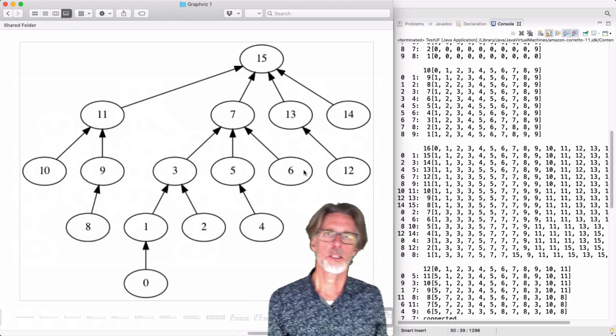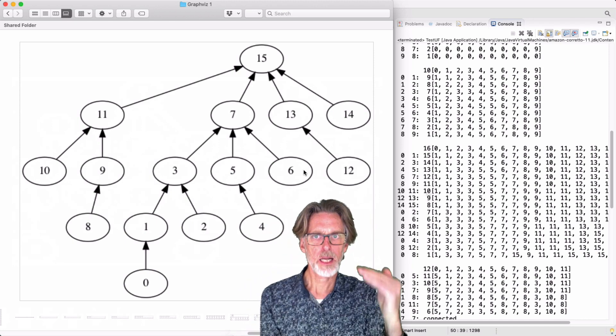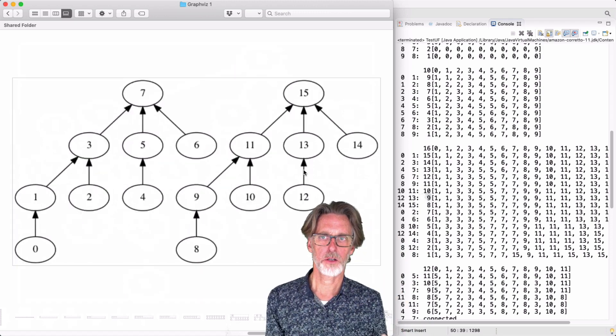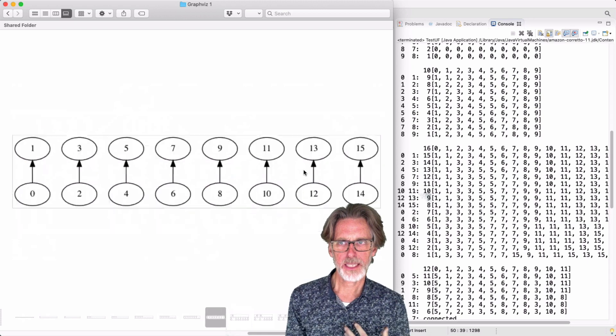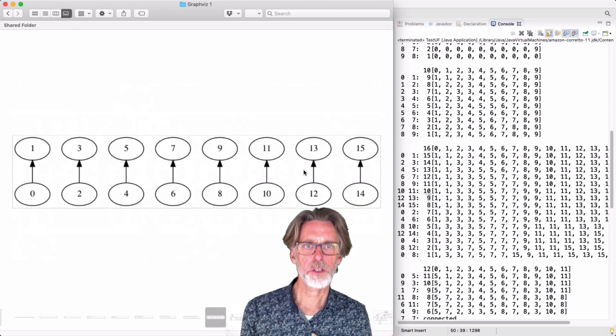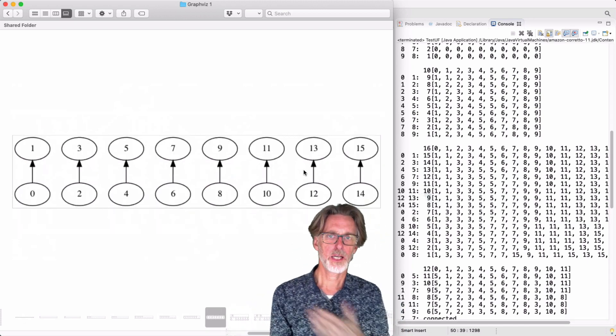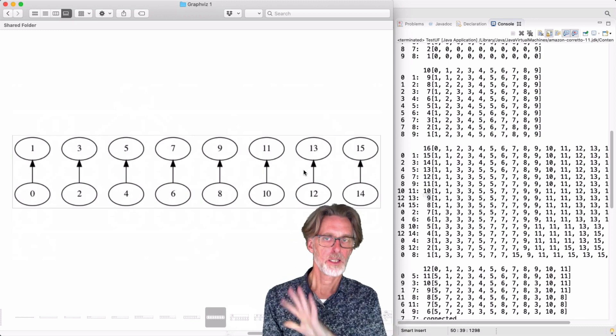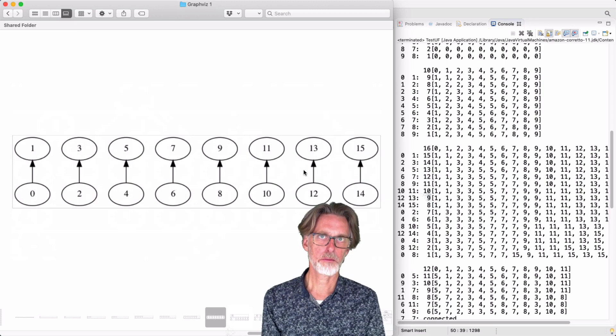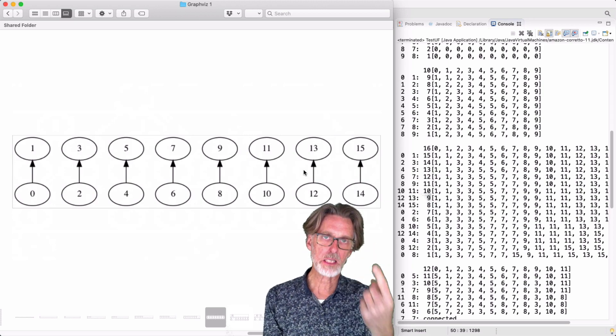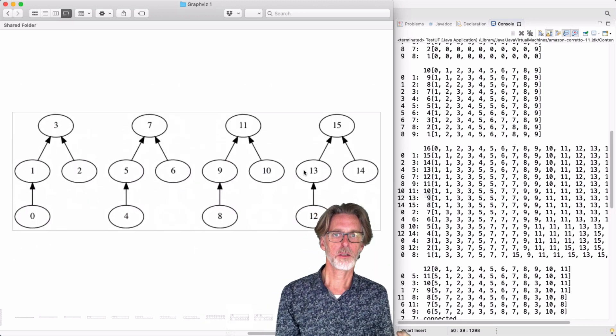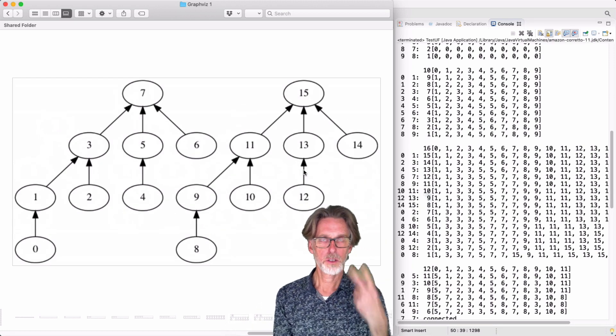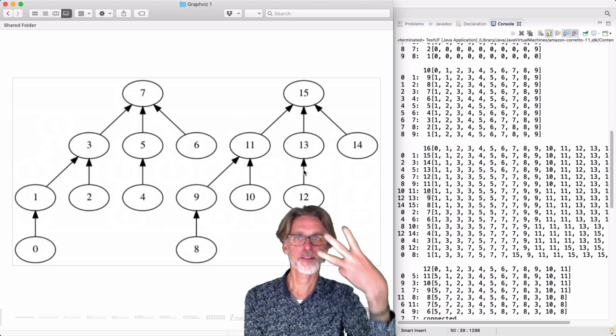One thing that's interesting to note here is how deep this tree-like structure is getting. So if we start at the beginning, you can see that, well, initially we had 16 elements of depth 0. Now we have 8 connected components with depth 1. Here we have 4 connected components of depth 2. Then we go to 2 connected components of depth 3.